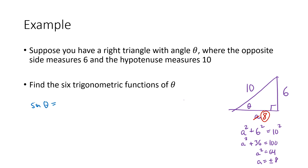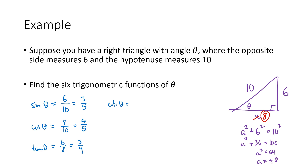Now we can find all six trigonometric functions. From SOHCAHTOA: sine of theta is opposite over hypotenuse, so 6 over 10, which reduces to 3 over 5. Cosine of theta is adjacent over hypotenuse, so 8 over 10, which reduces to 4 over 5. Tangent of theta is opposite over adjacent, so 6 over 8, which reduces to 3 fourths. For the other three: cotangent of theta is adjacent over opposite, so 8 over 6, which is 4 thirds. Secant of theta is hypotenuse over adjacent, so 10 over 8, which is 5 over 4. And cosecant of theta is hypotenuse over opposite, so 10 over 6, which reduces to 5 over 3.